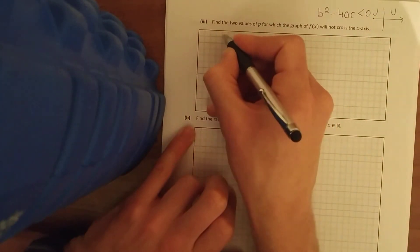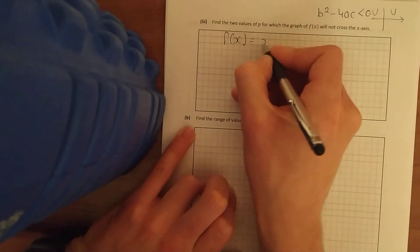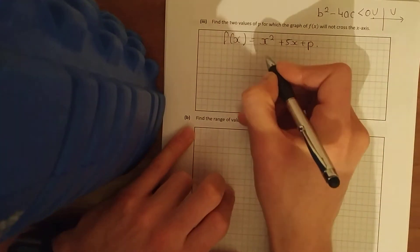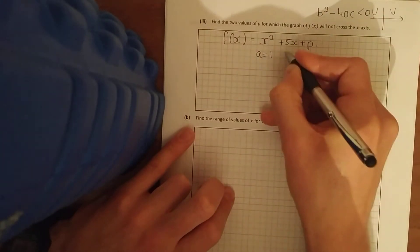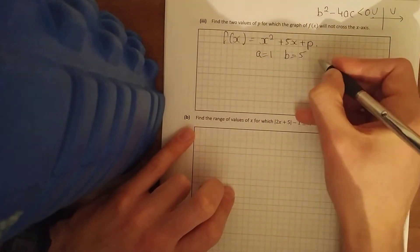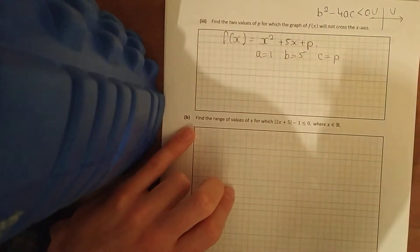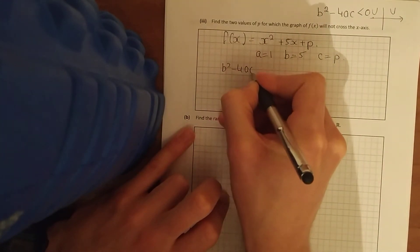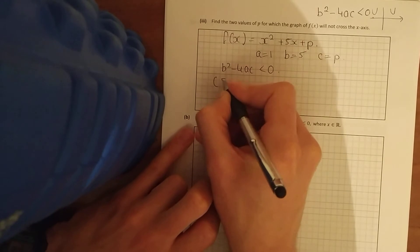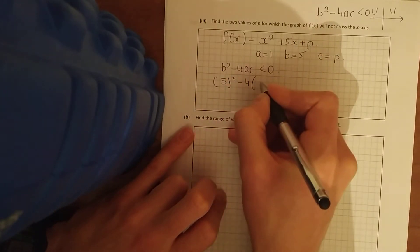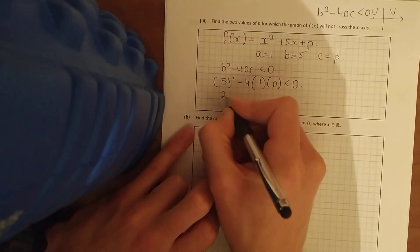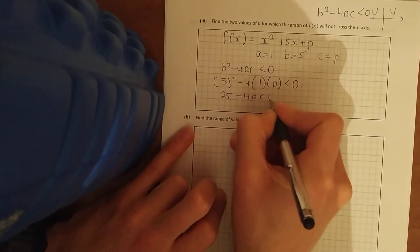So my quadratic there is f of x equals x squared plus 5x plus p. a is the coefficient, the number before x squared, b is the coefficient of x, the number before x, and c is what's left at the end, the constants at the end. So b squared minus 4ac is less than zero: 5 squared minus 4 times 1 times p.